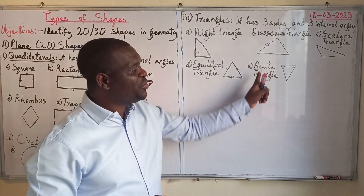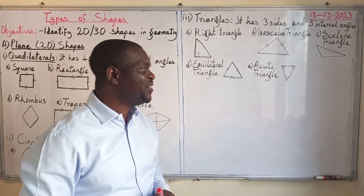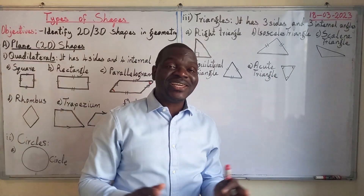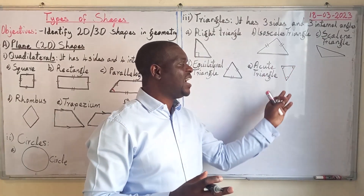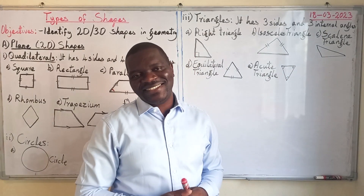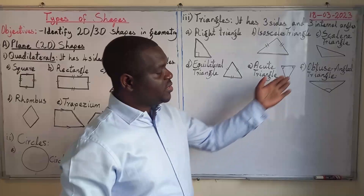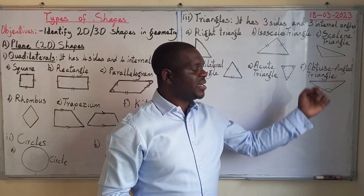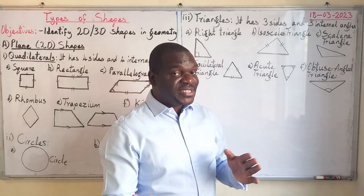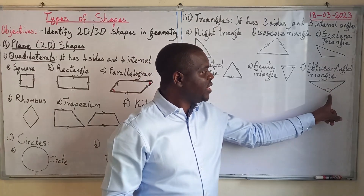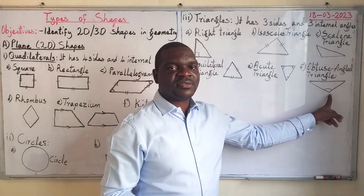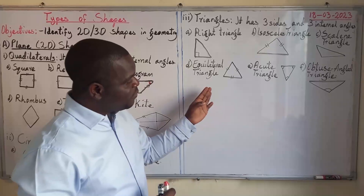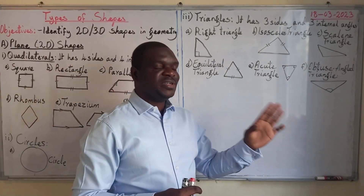This diagram represents an acute triangle. An acute triangle has all its internal angles less than 90 degrees. The last type is an obtuse-angled triangle, where one of its angles is more than 90 degrees.